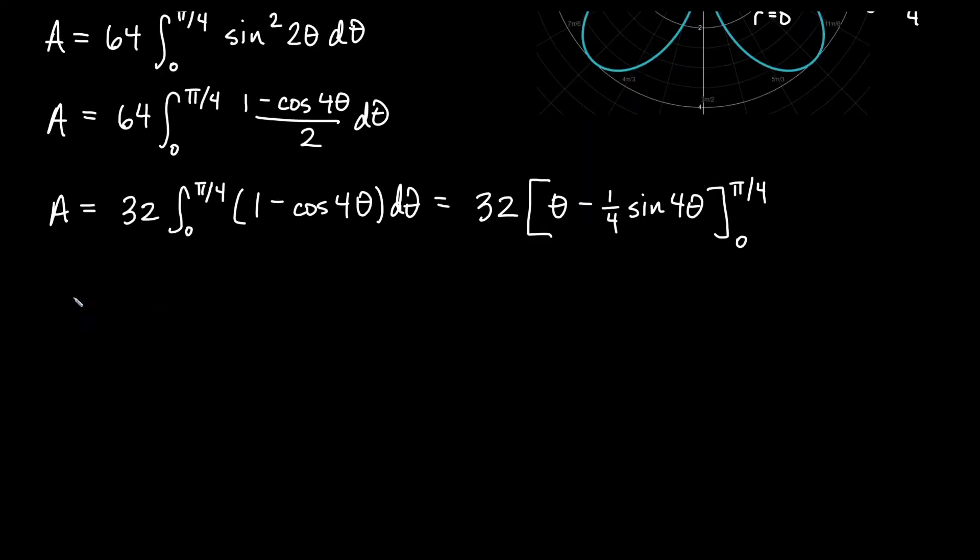Let's do some plugging in now. Our area equals 32 times, plugging in pi over four first, I would get pi over four minus one fourth sine of, we have four times theta, so plugging in pi over four you would get 4 times pi over four. This would be sine of pi, and that is actually zero. So we get that there.